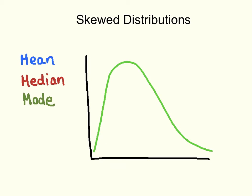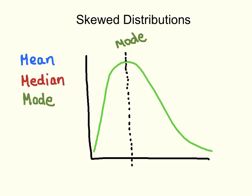By looking at the shape of the distribution, one of the most important things we can tell is the relative locations of the mean, median, and mode. These are measures of central tendency, which is a single number that best characterizes a particular set of data. Let's start with the mode. The mode represents the most common value in the data set, so for a distribution, the mode is always at the apex of the distribution because this is the value that is most frequent.